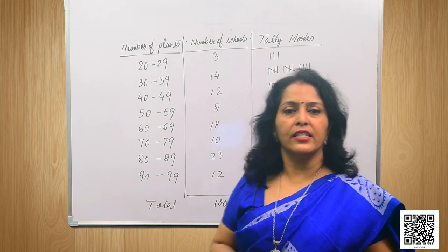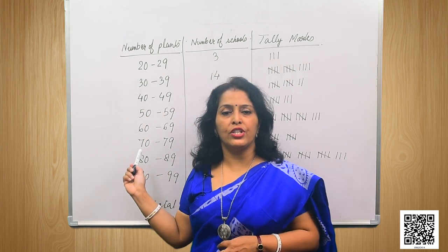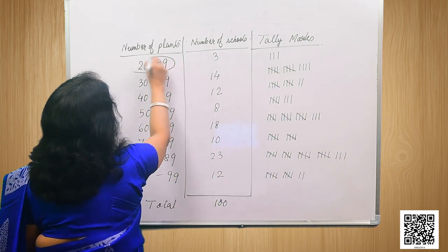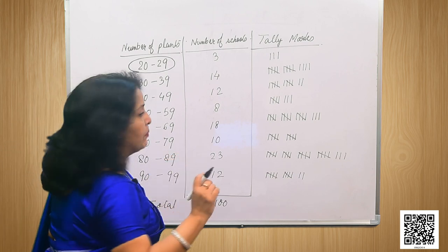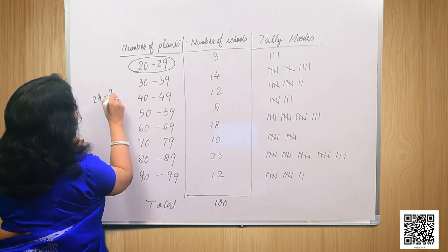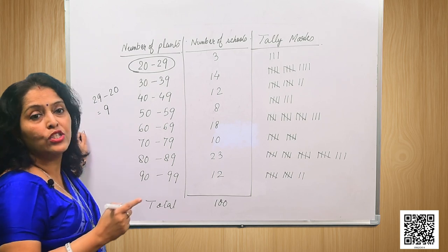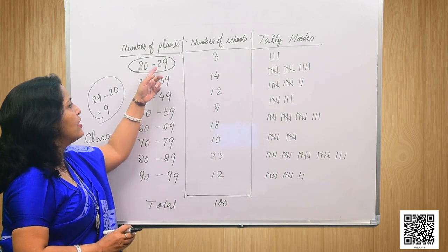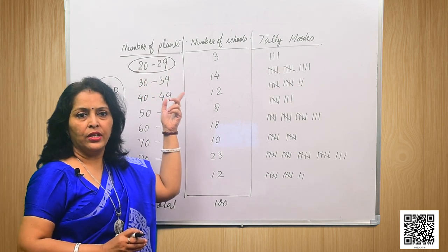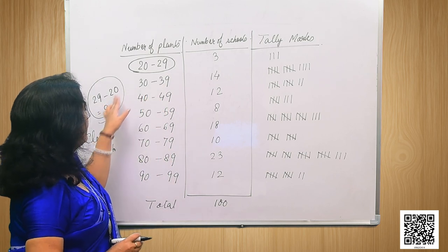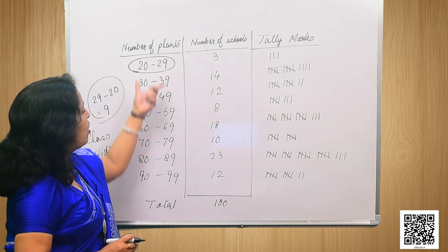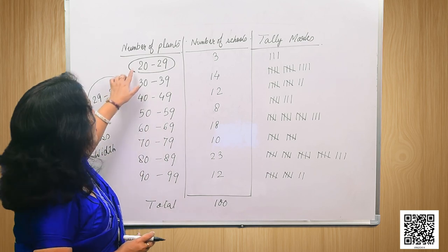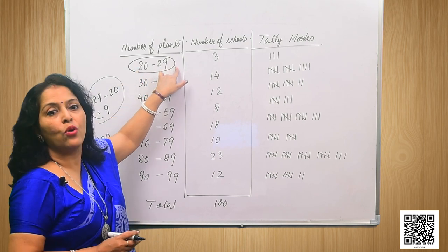This is called a classified frequency distribution table. The groups like 20 to 29 are called classes. The difference between the class boundaries — for example, 29 minus 20 equals 9 — is called the class width. All classes here have a class width of 9. Also note: in every class interval, the first number is called the lower limit and the last number is called the upper limit.